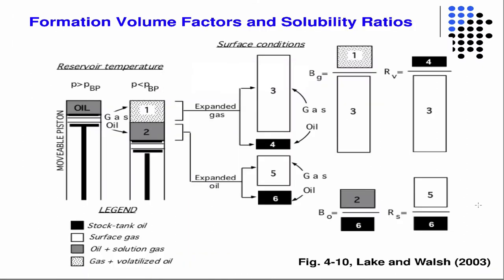However, we have to give some special consideration to what the formation volume factor for oil is. This is a busy figure but a very good one. If we think of our oil like a piston, it's under pressure in the reservoir and initially everything is oil. Then we drop our piston by lowering the pressure, and gas comes out of solution — and also possibly volatilized oil goes into gas. The pressure at which that occurs is the bubble point, P_BP.